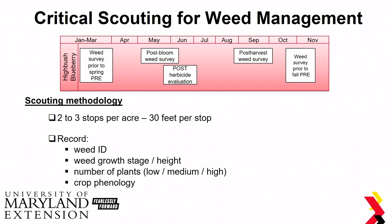Usually when you do your survey, make two to three stops per acre for about 30 feet, and record what weeds are present, the growth stage of those weeds, the density of the infestation, and what stage your crops are at and how your crop looks.